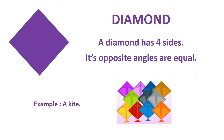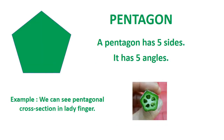Diamond. A diamond has four sides. Its opposite angles are equal. Example: a kite.